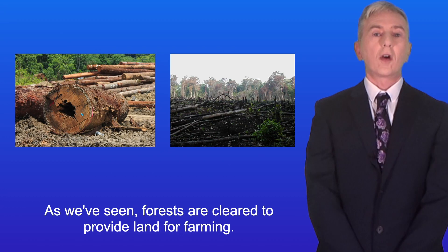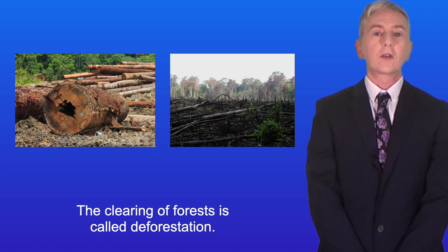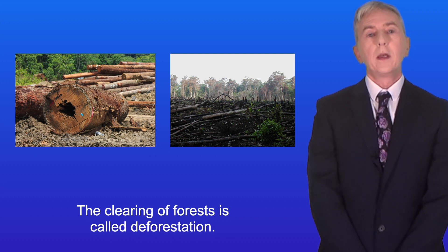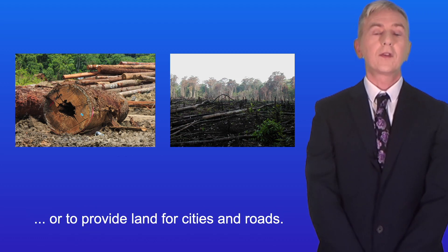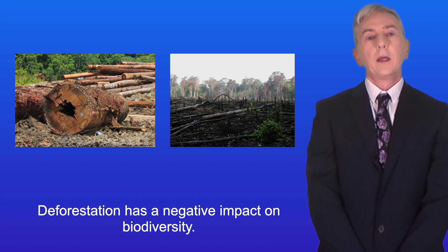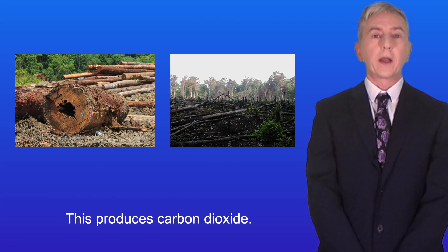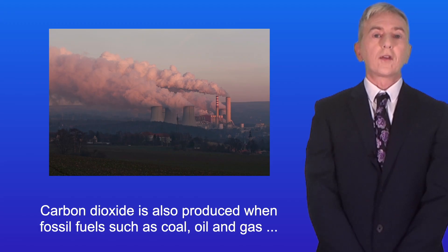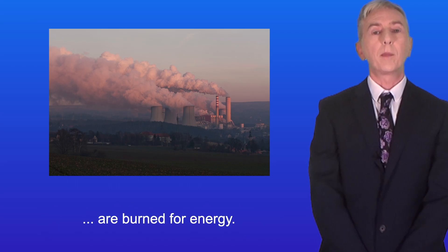Forests are cleared to provide land for farming, and the clearing of forests is called deforestation. Deforestation is also carried out to provide wood for construction and for fuel, or to provide land for cities and roads, and deforestation has a negative impact on biodiversity. Often with deforestation the forests are burned and this produces carbon dioxide. Carbon dioxide is also produced when fossil fuels such as coal, oil and gas are burned for energy.